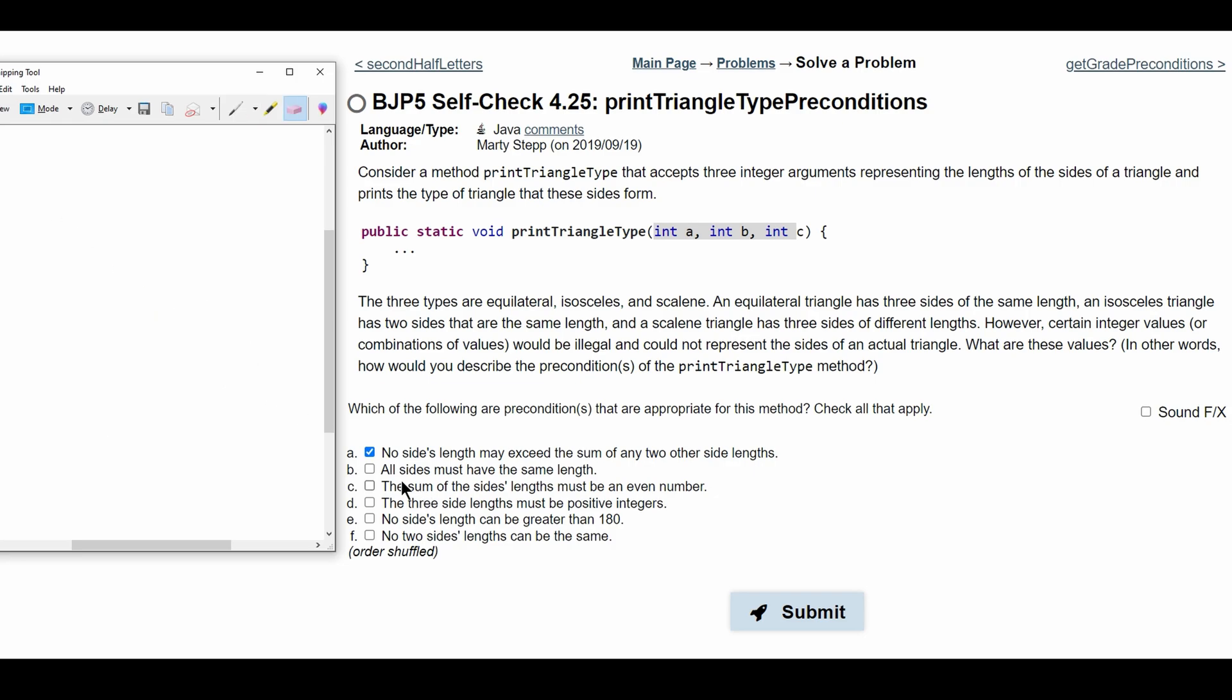For part B, we have all sides must have the same length. This does not need to be a precondition because an equilateral triangle has all sides of the same length. So we're going to leave this unchecked.